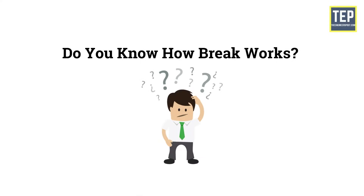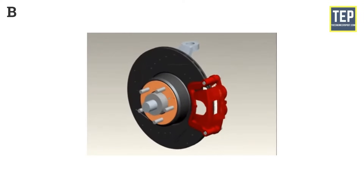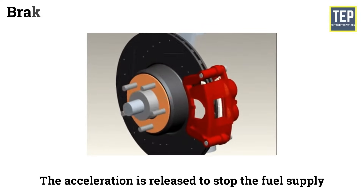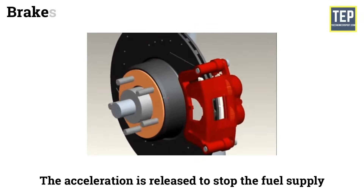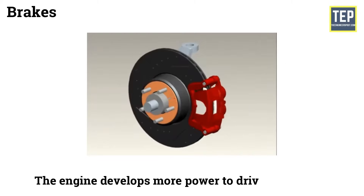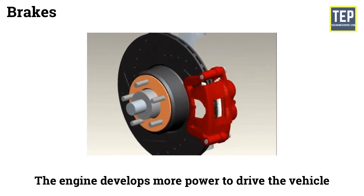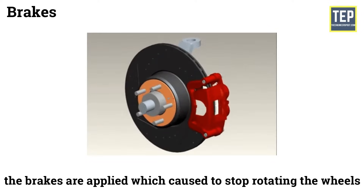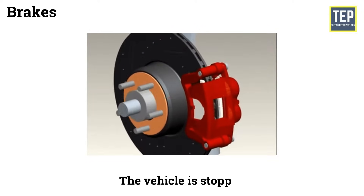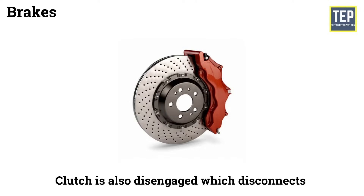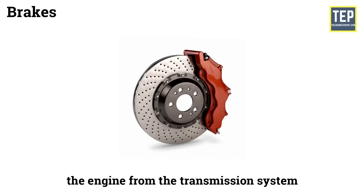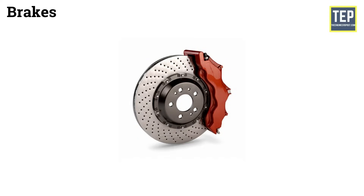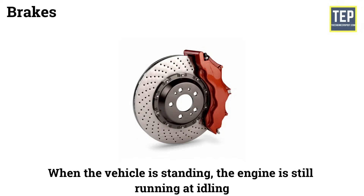But do you know how a brake works? Before applying the brakes, the acceleration is released to stop the fuel supply. The engine develops more power to drive the vehicle, and then the brakes are applied which causes the wheels to stop rotating. The clutch is also disengaged, which disconnects the engine from the transmission system. So when the vehicle is standing, the engine is still running at idling.